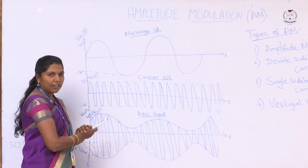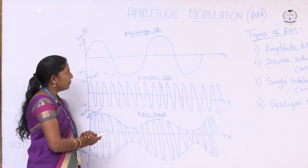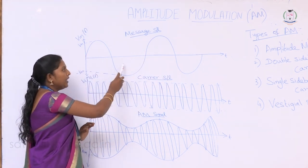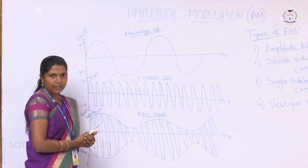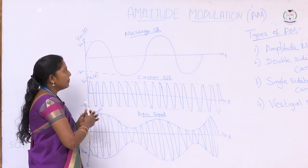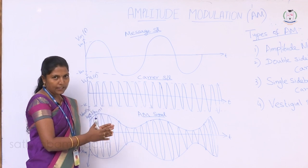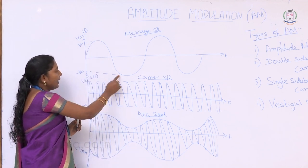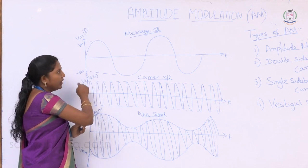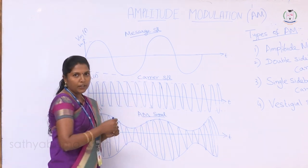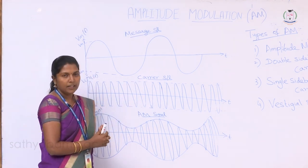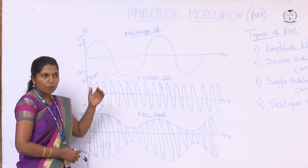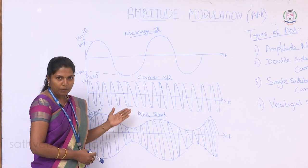This is the graphical representation of amplitude modulation. This is the message signal which we are going to modulate. The other name for the message signal is baseband signal or modulating signal. This message signal is of low frequency, with maximum amplitude Vm and minimum amplitude minus Vm. Since it is a sinusoidal waveform, it is represented as Vm sin(ωm·t).